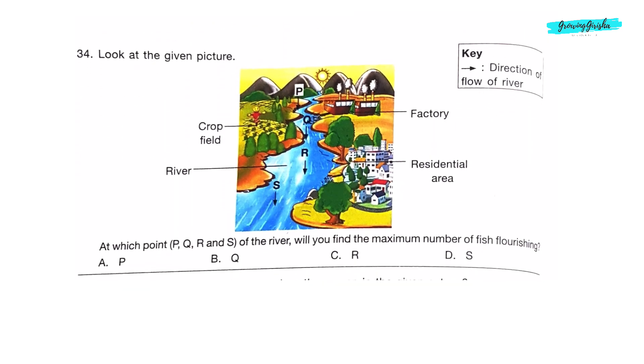Question 34: Look at the given picture. At which point P, Q, R, S of the river will you find maximum number of fish flourishing? At point P, the water is least polluted, so maximum number of fish will flourish at this point. At point Q, wastes are added from the factories. At point R, dirt and wastes are added from residential areas. At point S, water will be fully contaminated because it has both waste from factories and waste from residential areas. So option A is the correct answer.